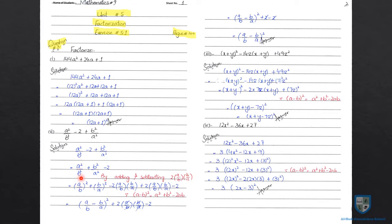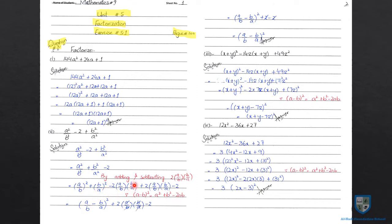यह A का भी square है और B का भी square है, तो यह A over B whole square के equal. Plus — next इस term में भी B का भी square है और A का भी square है, तो B over A whole square. Minus — अब 2 into A over B into B over A को पहले हमने minus किया और फिर हमने add किया. Subtraction and addition होगी. Then minus 2 as it is. अब अगर हम इसको overall देखें, तो यह हमारे पास जो first three terms हैं, वो identity complete कर रही हैं: A minus B whole square is equal to A square plus B square minus 2AB. अगर A यहाँ पे A over B के और B यहाँ पे B over A के equal हो तो यह identity यहाँ से complete होगी.